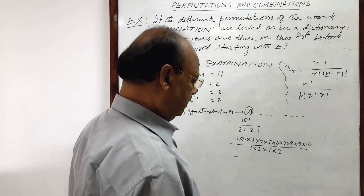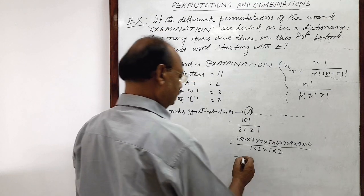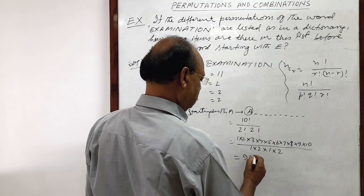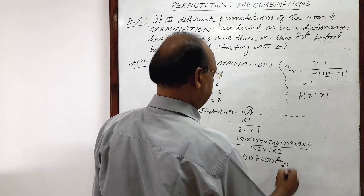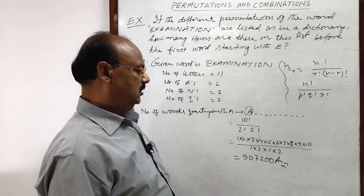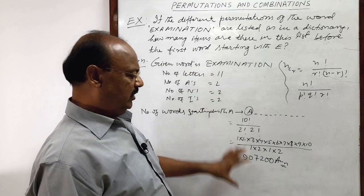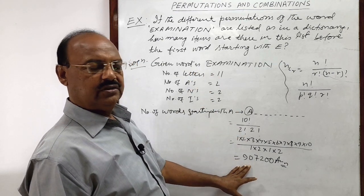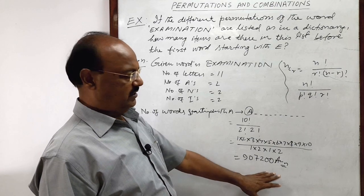And after multiplication, we will find that the number which we will get is here 97,200. This will be the answer. So total number of words before the words starting with E will be this many words: 97,200. This is the answer.